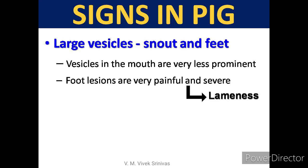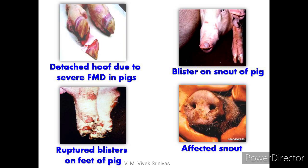In pigs, large vesicles are observed in the snout and feet region. Severity of lesions in the foot region is more pronounced, leading to lameness. Pictures include: detached hoof due to severe FMD, blisters on the snout, ruptured blisters on feet, and the affected snout.